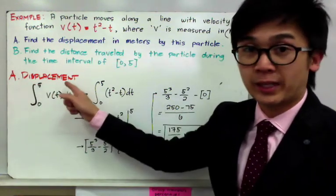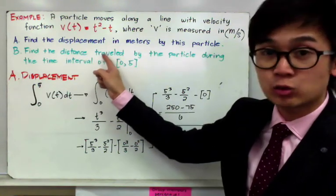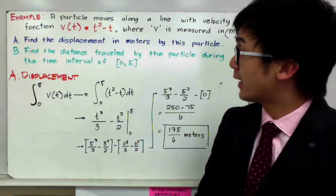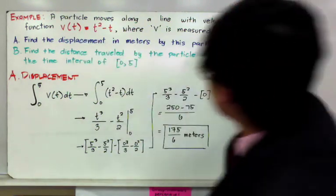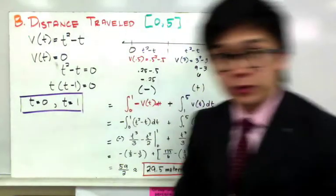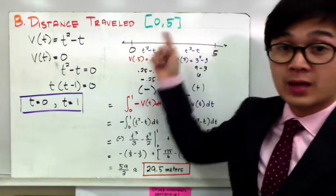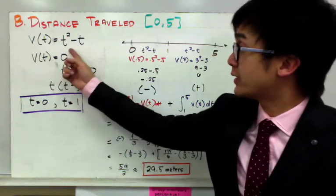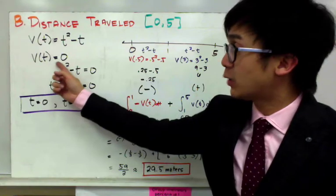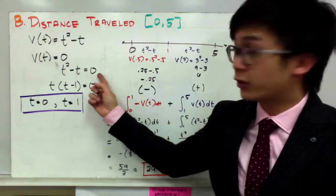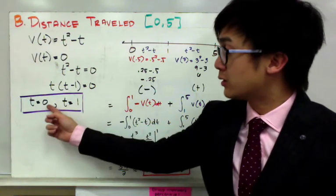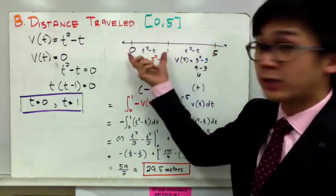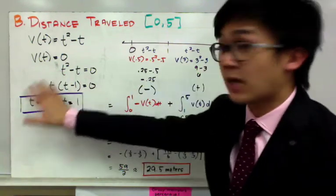This is the integral notation for displacement. To answer part b, we need to find the distance traveled by the particle from time 0 to 5. To do that, we use the integral notation again to find the approximated distance. We first need to use a sign chart, and for that we find the critical values of v(t) = t² − t by setting v(t) = 0. The critical values are t = 0 and t = 1, allowing us to partition the interval into [0, 1] and [1, 5].